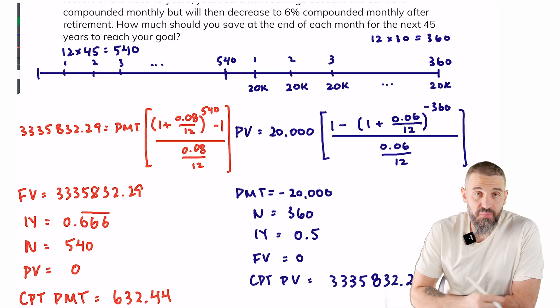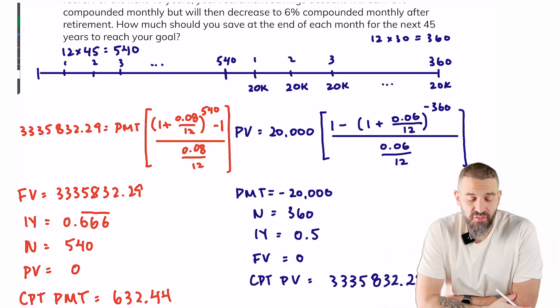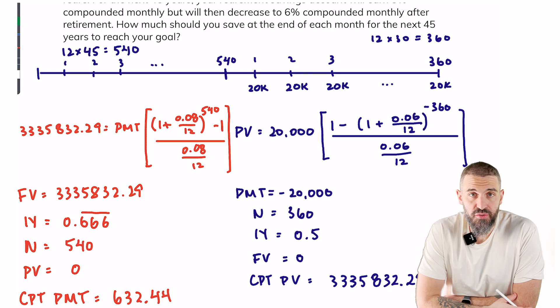So you would have to save $632.44 every month for the next 45 years so that you can withdraw $20,000 per month every month for the following 30 years. That shows you the power of compounding.